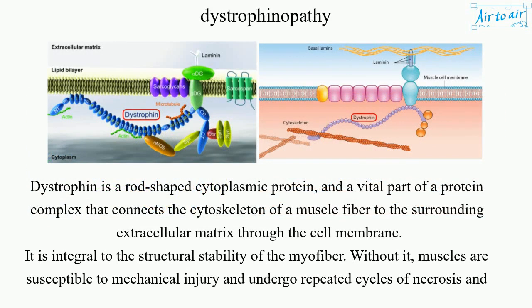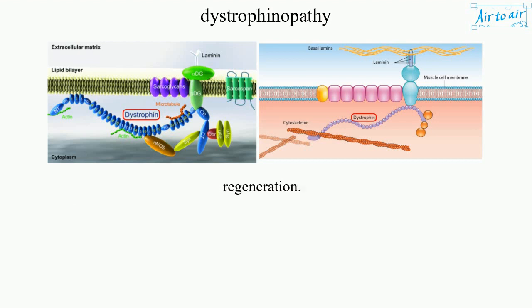Dystrophin is a rod-shaped cytoplasmic protein, and a vital part of a protein complex that connects the cytoskeleton of a muscle fiber to the surrounding extracellular matrix through the cell membrane. It is integral to the structural stability of the myofiber. Without it, muscles are susceptible to mechanical injury and undergo repeated cycles of necrosis and regeneration.